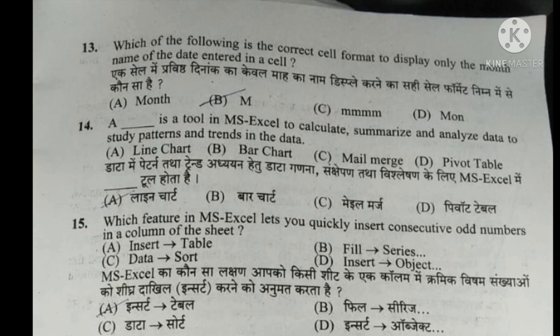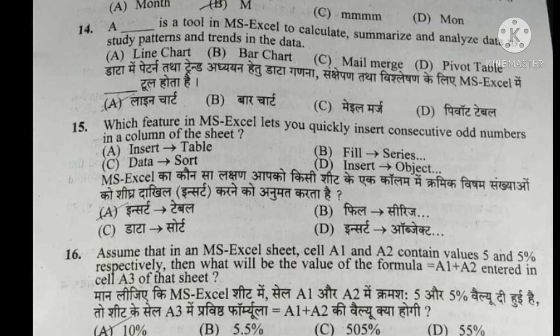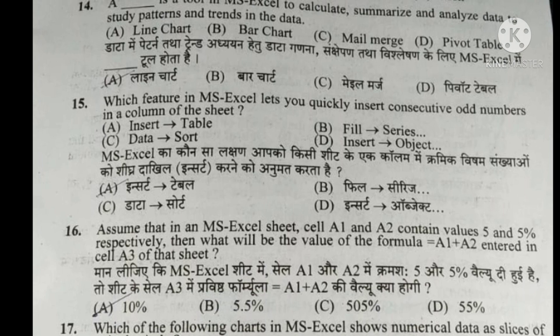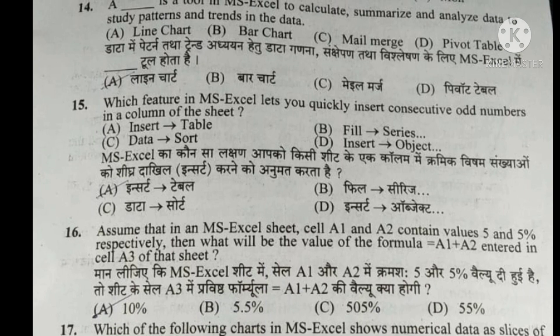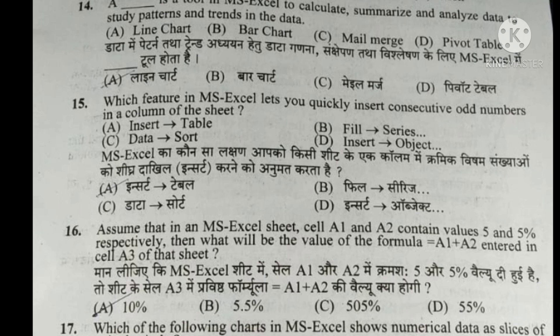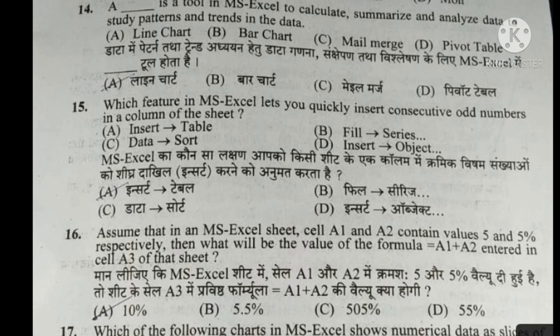I will start with the question paper. Which of the following is the correct cell format to display only the month name of the data entered in a cell? The right answer is C. The next question is: a dash is a tool in MS Excel to calculate, summarize and analyze data to study patterns and trends in the data. The answer is D.